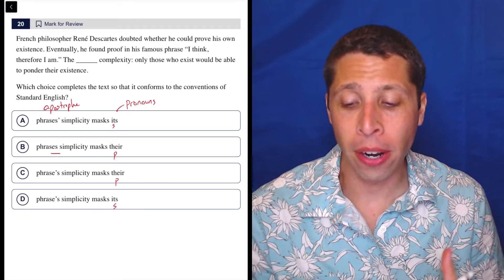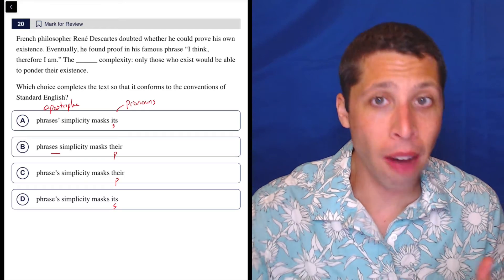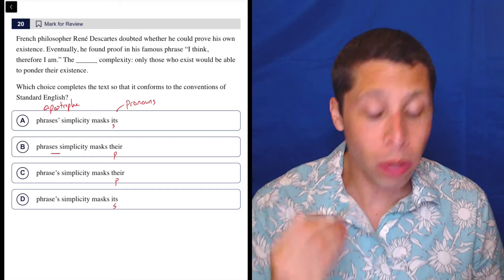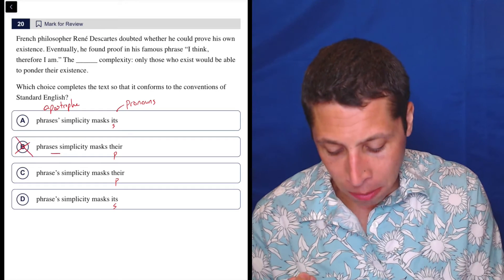Phrases aren't physical things either. It's kind of a characteristic of the phrase. There is this belonging, this ownership. So we do need an apostrophe. All that does for me is get rid of choice B.